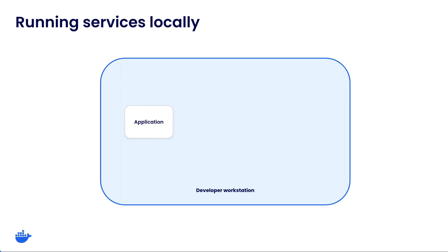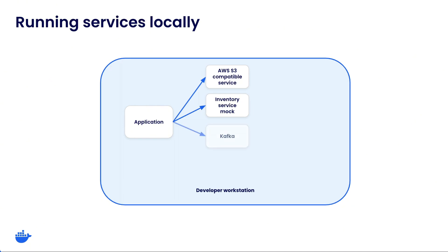Option two is to create a development environment in which a developer runs each of these dependent services locally on their machine. With containers, this is pretty easy to do. So instead of deploying remote cloud infrastructure and managing IAM policies and S3 buckets, I can simply run a local S3-compatible service such as MinIO or LocalStack. Instead of relying on the external inventory service directly, I can use an API mock such as WireMock to work against the API. I can also run Kafka and Postgres locally as well.